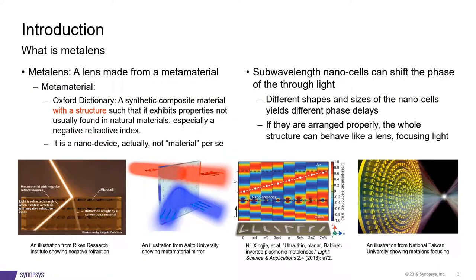First, what is a metalens? According to the definition found in literature, metalens is a lens made from a metamaterial. But what is a metamaterial? It is a synthetic composite material with a structure that exhibits properties not usually found in natural materials, specifically a negative refractive index. So the metamaterial is a nano device, not a conventional material per se.